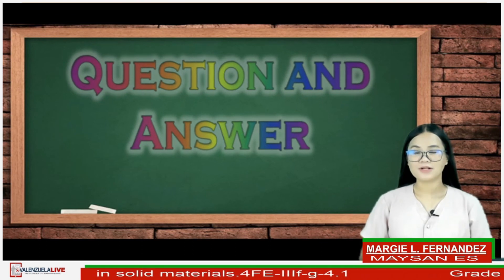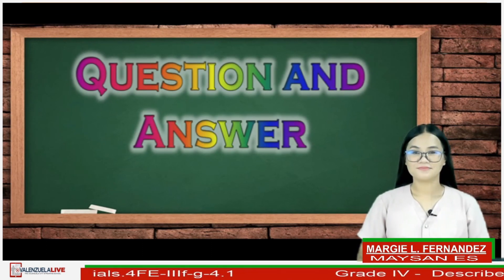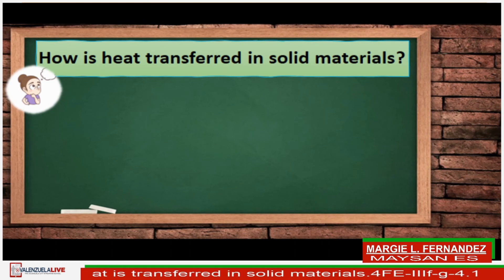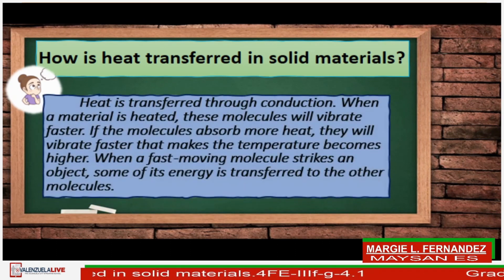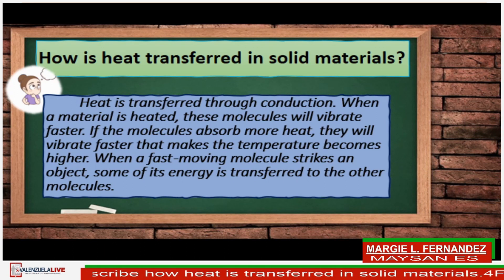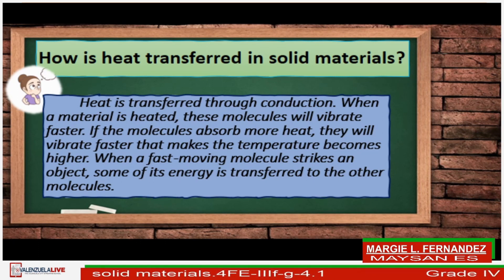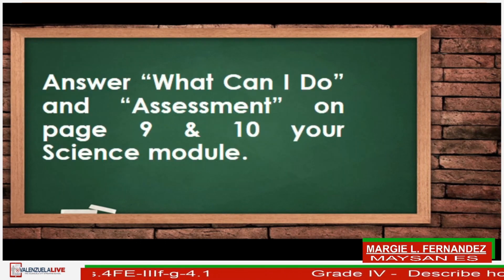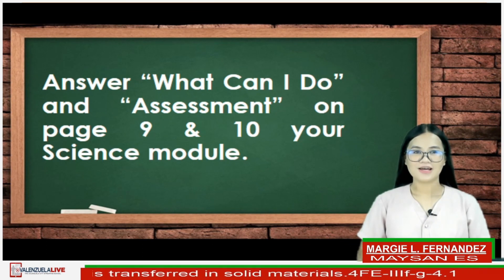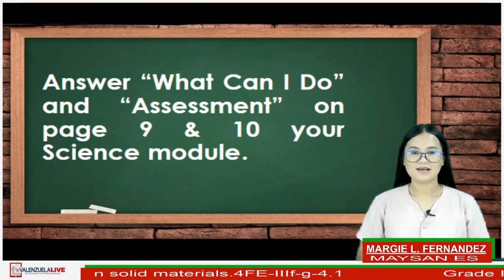If you have questions about our lesson for today, just comment below. There is a question from the comment section: How is heat transferred in solid materials? The answer is that heat is transferred through conduction. When a material is heated, the molecules will vibrate faster; if they absorb more heat, they vibrate even faster and the temperature becomes higher. When a fast-moving molecule strikes another object, some of its energy is transferred to the other molecules. I think you can now answer your self-learning module — pages 9 and 10 of your science module.